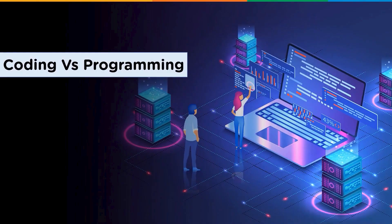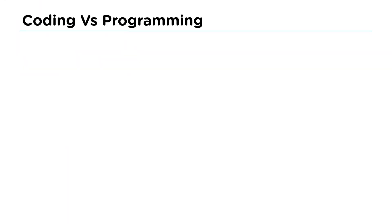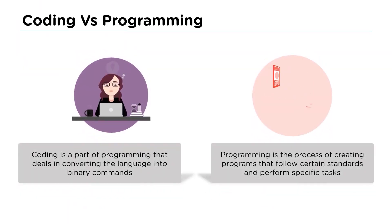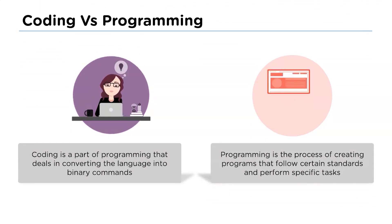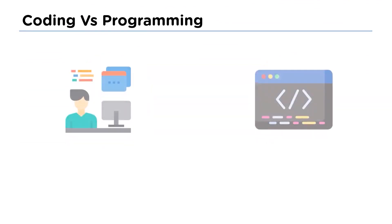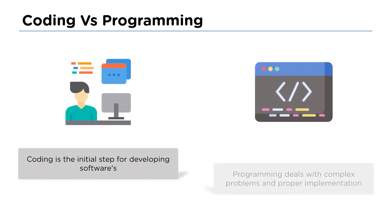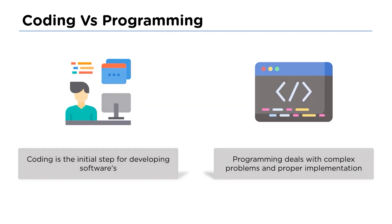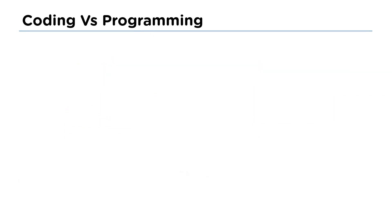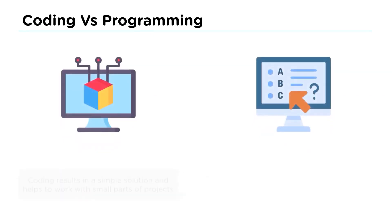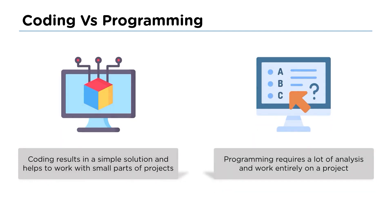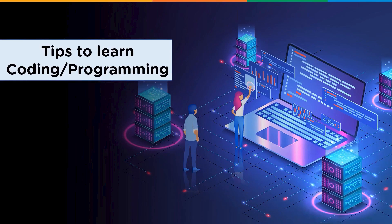Now let's look at some differences between coding and programming. Coding is a part of programming used to help convert language into binary codes to communicate with the computer, whereas programming is a process of creating specific tasks according to standards. Coding is a basic step in implementing software, whereas programming deals in depth with implementation and complex problems. Coding works with simple, shorter projects while programming deals with big projects and complete analysis.